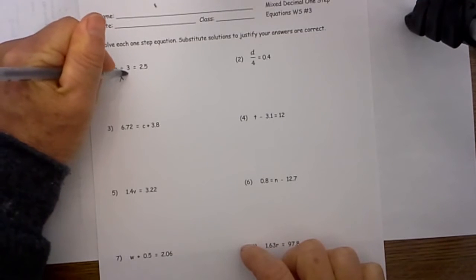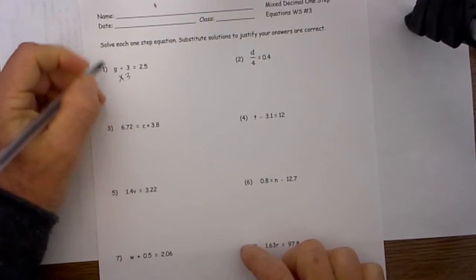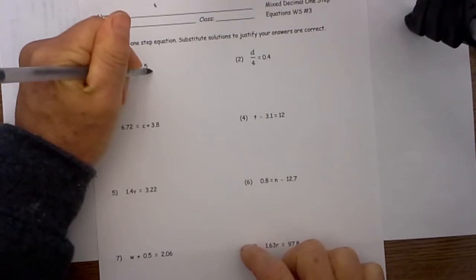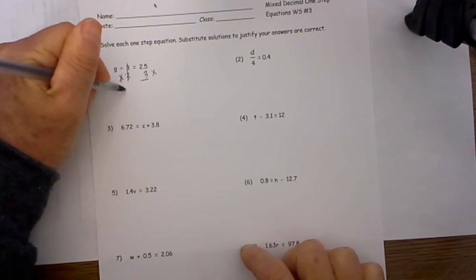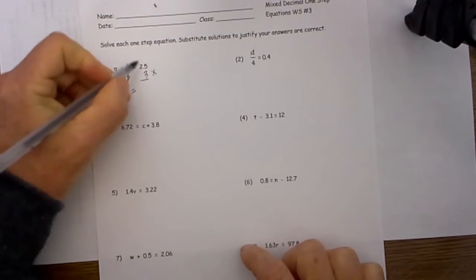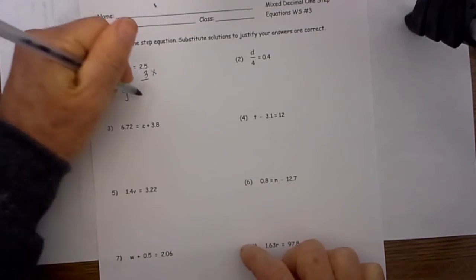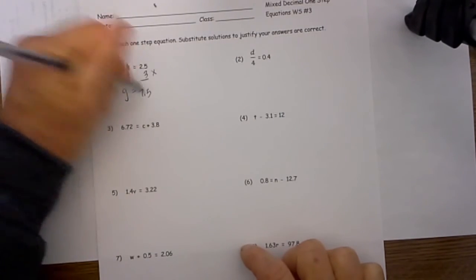So we are going to multiply by 3, and since we multiply by 3 on this side we are going to multiply by 3 on the other side. The 3's cancel. Bring down the g. 2.5 times 3 is equal to 7.5.